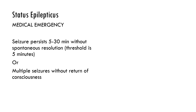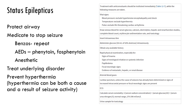Or, as mentioned earlier, multiple seizures without a return to consciousness. This is something you might encounter working in the emergency room — it is a true medical emergency requiring treatment. The treatment is multifaceted. First, we have to protect the airway; these folks may end up needing to be intubated. We need to medicate immediately to stop the seizure, and the initial medication would be benzodiazepines to quiet brain activity — generally given twice.